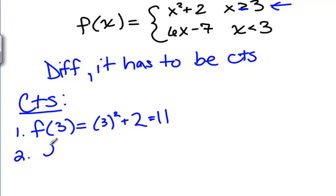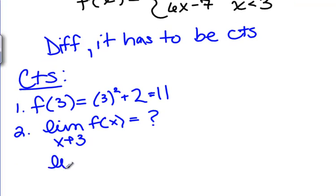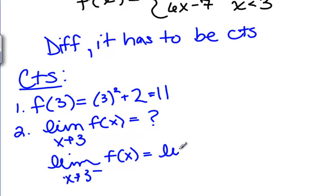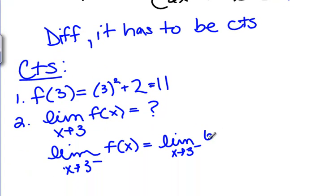Next, we need the limit as X goes to 3 to exist, and we find that limit by looking at the right and the left. The limit as X goes to 3 from the left uses the bottom function because that's the one we use when X is less than 3. So that's 6X minus 7, which gives us 18 minus 7, which is 11.